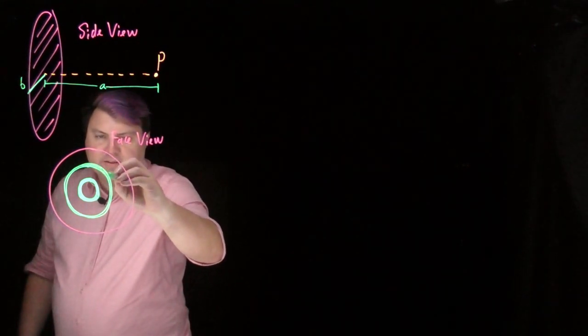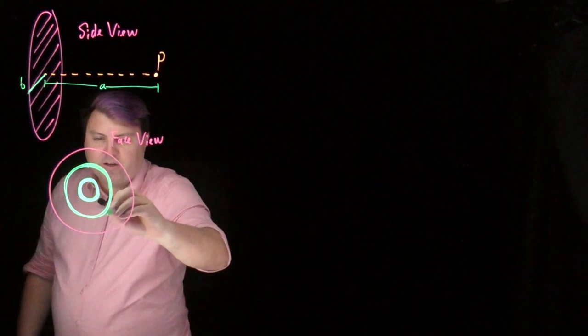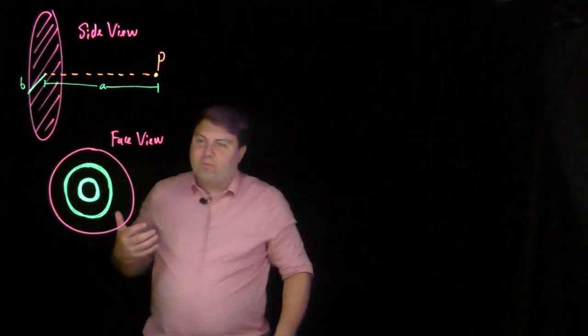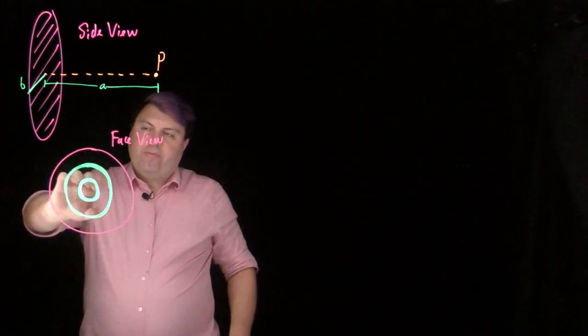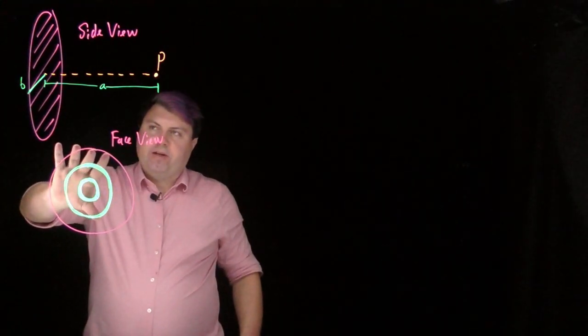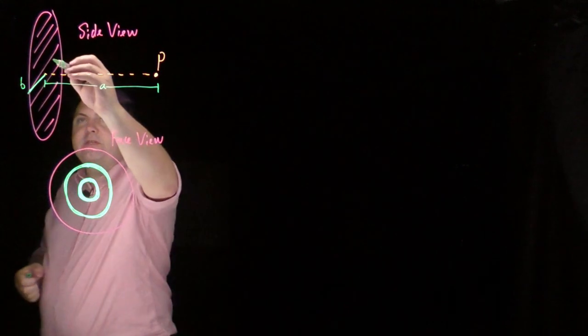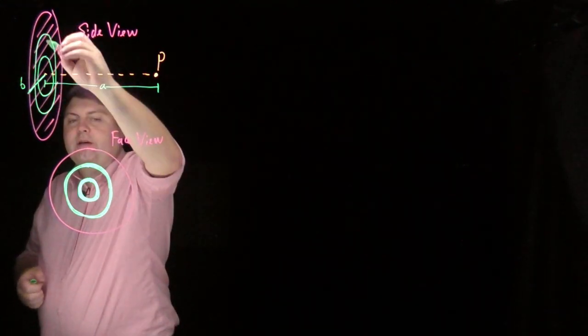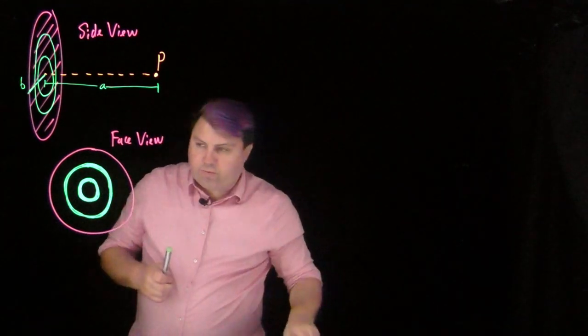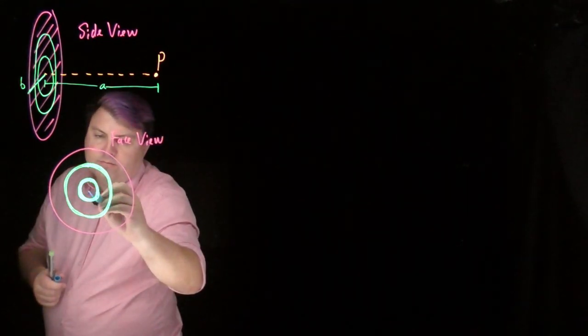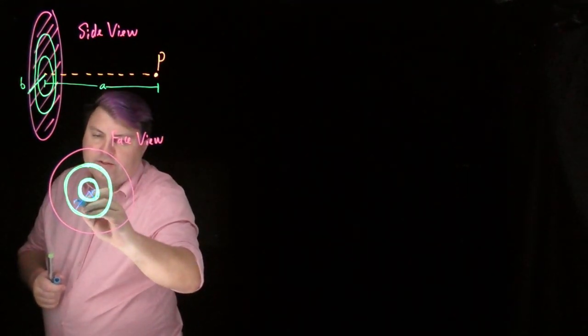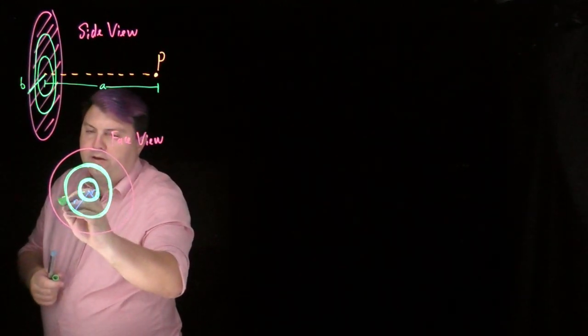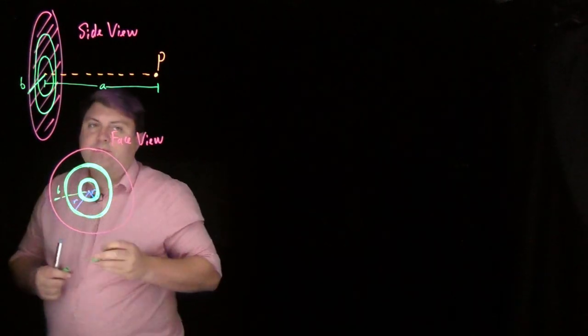And as three blue one brown said, if you match the symmetry of your shape, mathematics tends to reward you for this. So if we were to build it out of these individual rings, that's what's saying that we're building a ring like this and like this. So each ring is going to be of radius r, whereas the entire shape is going to be radius b.